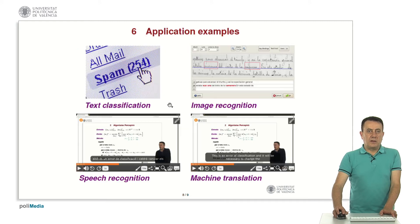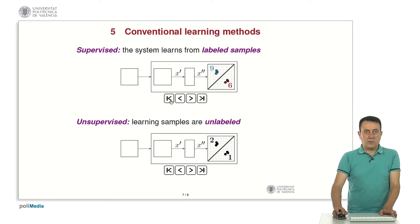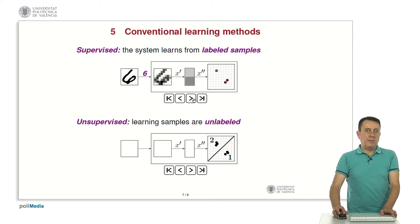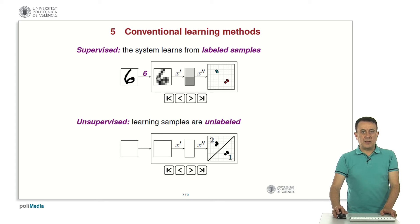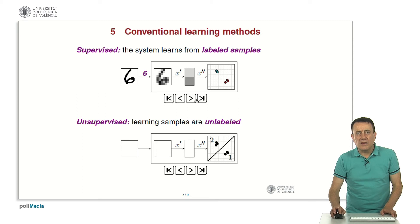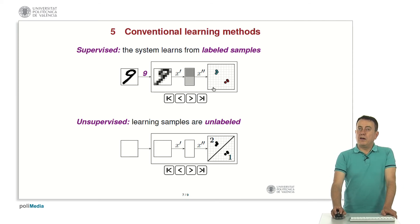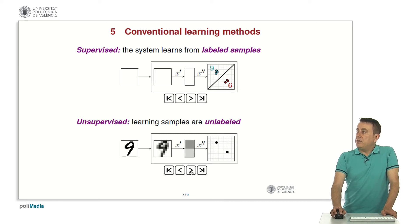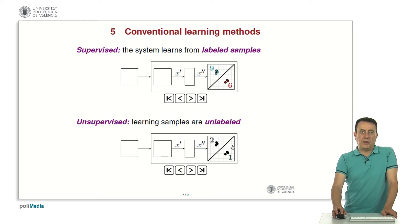How are these systems learned? There are two basic methods. In supervised learning, samples are provided with their corresponding labels, and the system learns by finding the boundary that divides the classes. In the unsupervised case, the samples are not labeled, and the system must also guess the number of classes and the boundaries that divide them in an unsupervised way.